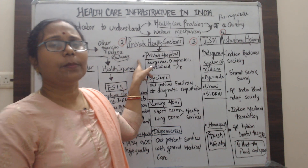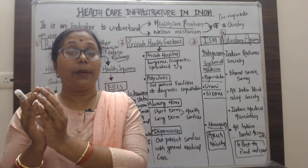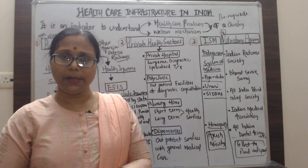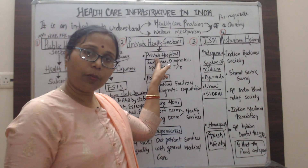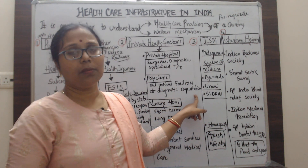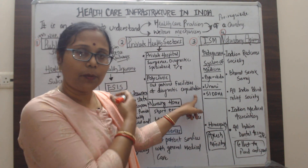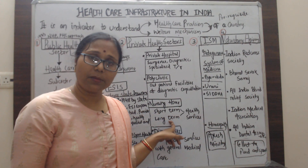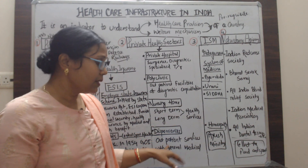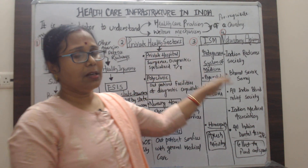Private hospitals may be established in large or small communities and provide surgery, diagnostic services, and specialist treatment. Polyclinics offer outpatient facilities for diagnostic and specialist consultation. Nursing homes provide both short-term and long-term treatment health services. Dispensaries offer outpatient services with general medicine care.